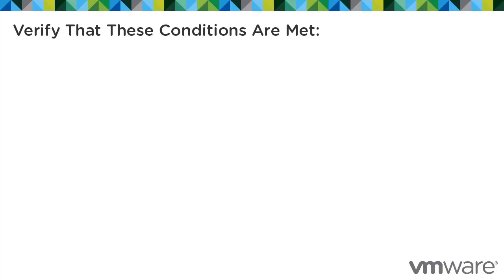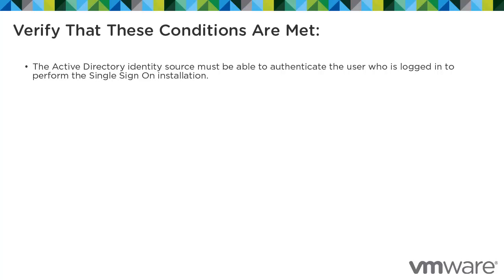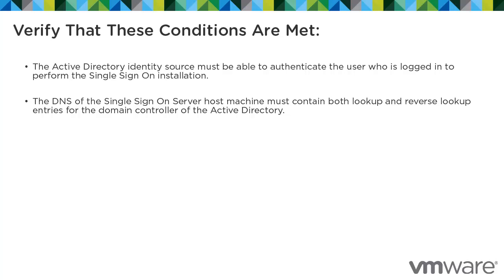For the vCenter Single Sign-On installer to automatically discover Active Directory Identity Sources, verify that the following conditions are met. The Active Directory Identity Source must be able to authenticate the user who is logged in to perform the Single Sign-On installation. The DNS of the Single Sign-On Server host machine must contain both lookup and reverse lookup entries for the domain controller of the Active Directory.